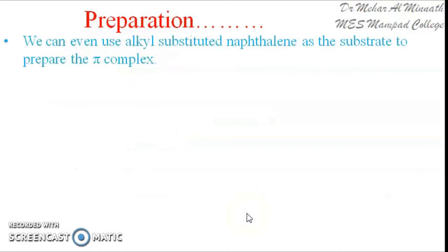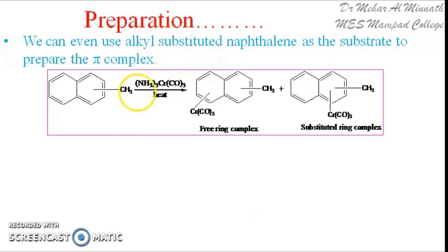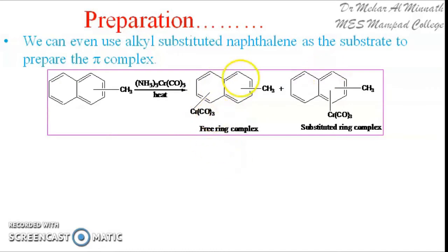When we use fused ring systems such as naphthalene, the pi complex formed is quite interesting. If you are using substituted naphthalene, particularly alkyl-substituted naphthalene, you get two different pi complexes: either the free ring complex or the substituted ring complex. The free ring complex means the chromium moiety gets attached to the ring to which the substituent is not attached. In the substituted ring complex, the chromium moiety gets attached to the ring bearing the substituent.